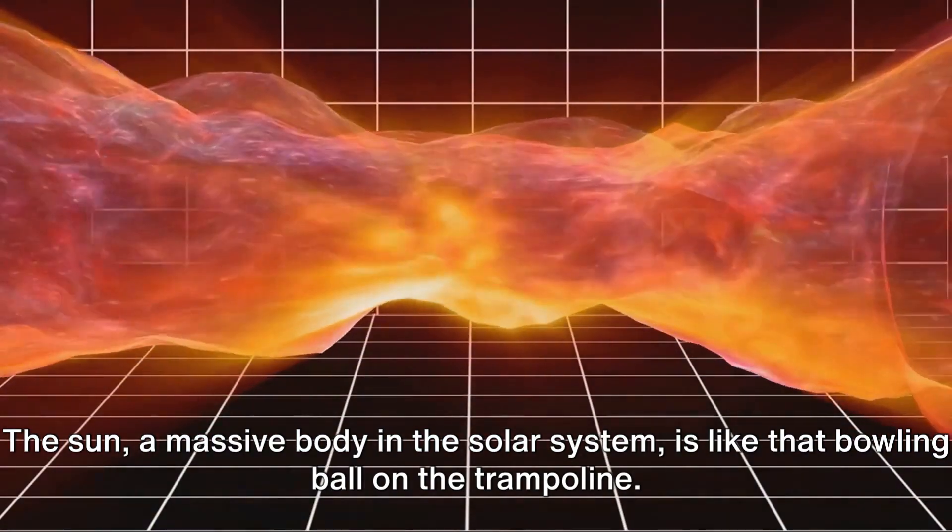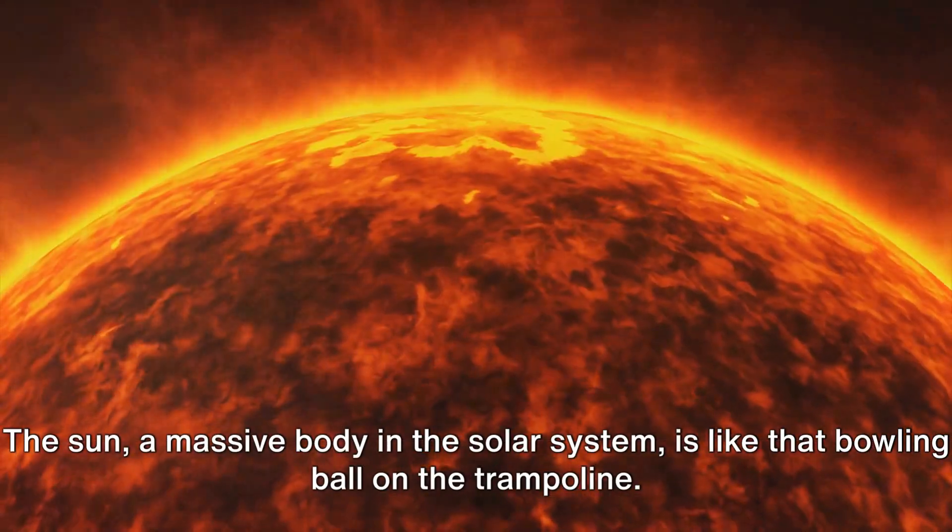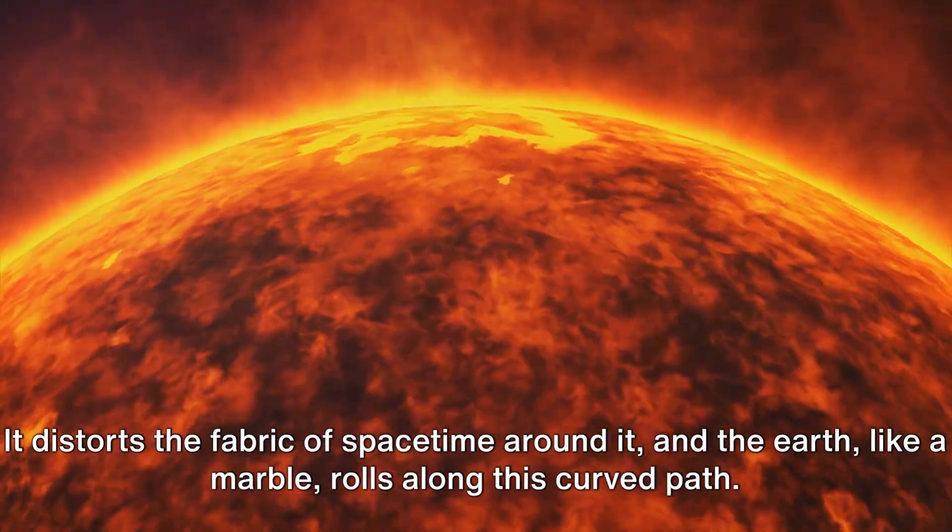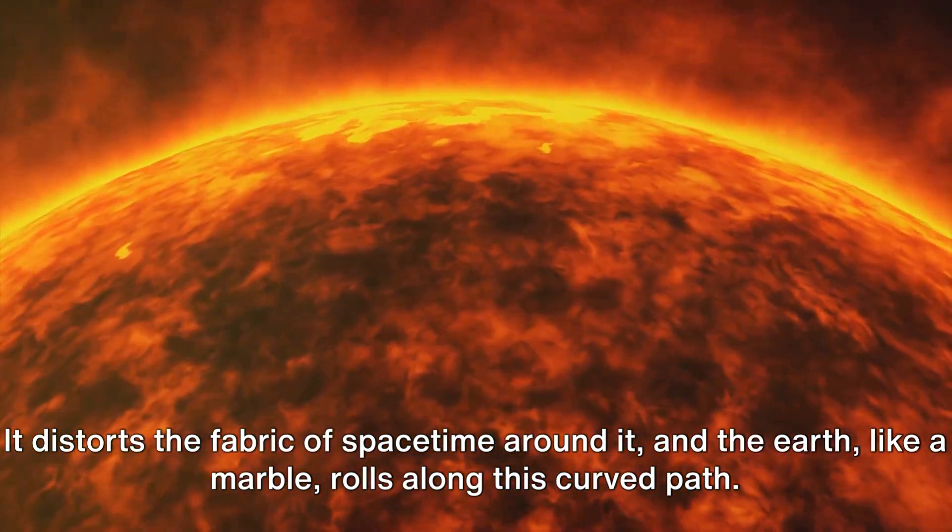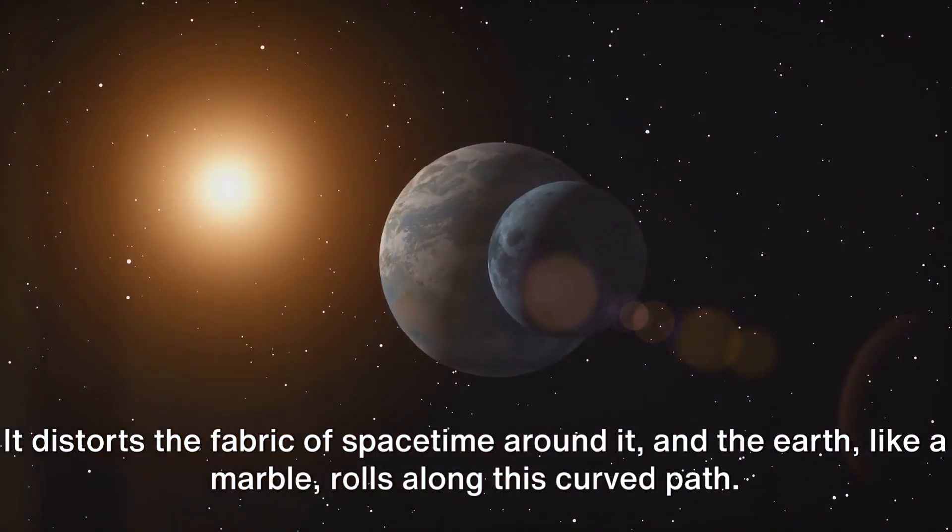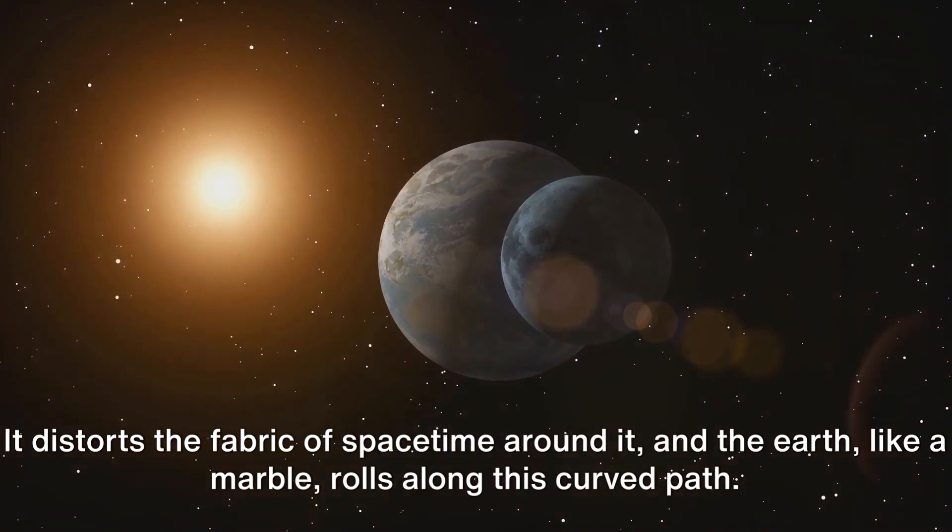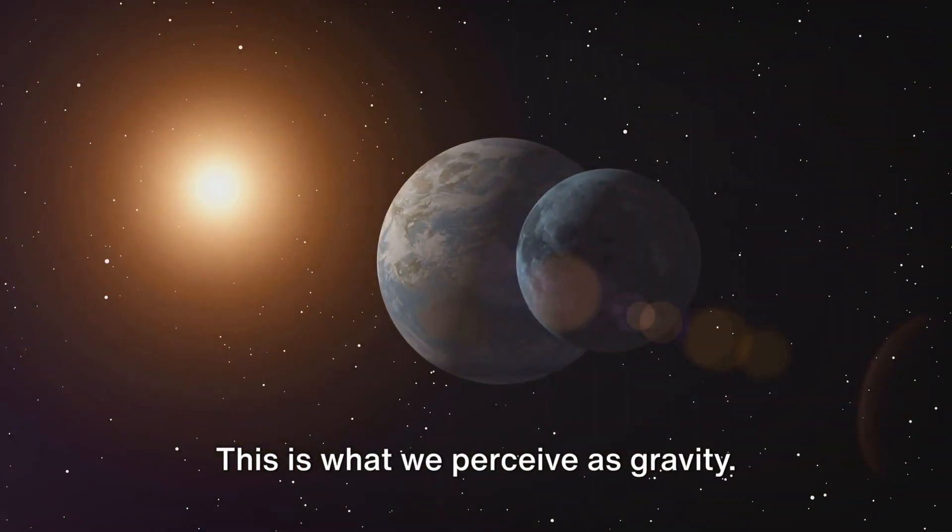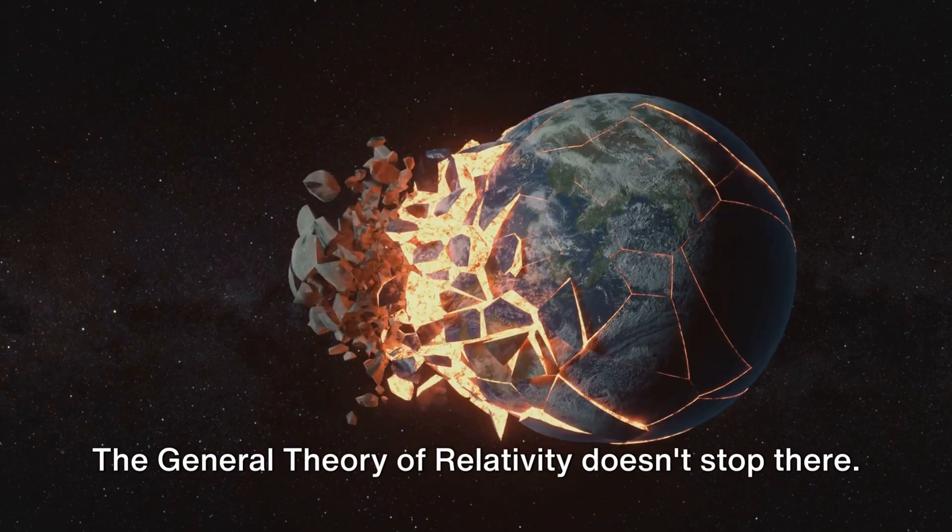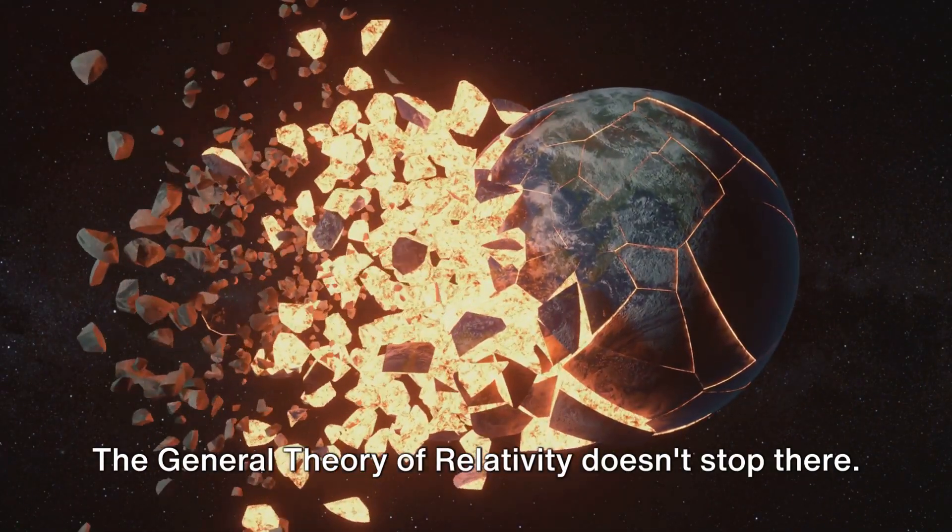The sun, a massive body in the solar system, is like that bowling ball on the trampoline. It distorts the fabric of space-time around it, and the earth, like a marble, rolls along this curved path. This is what we perceive as gravity.